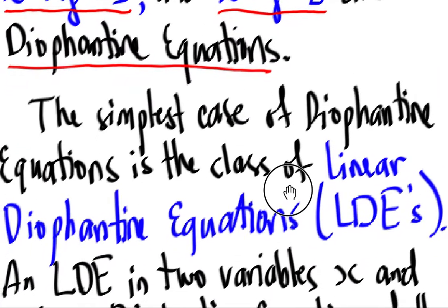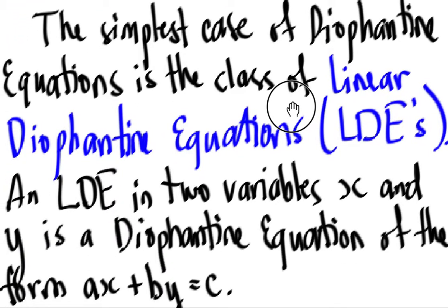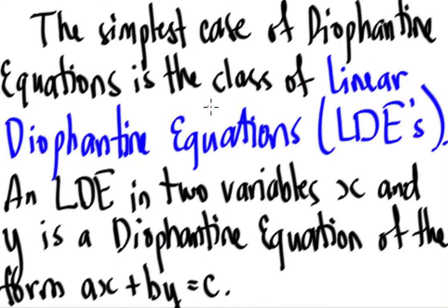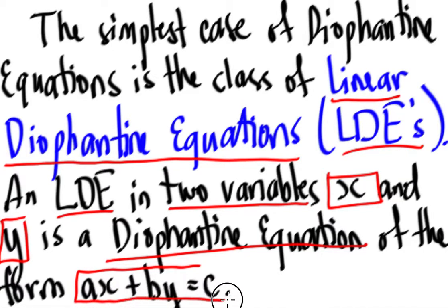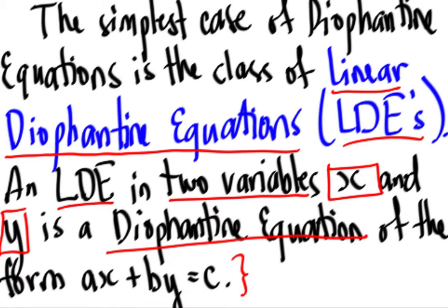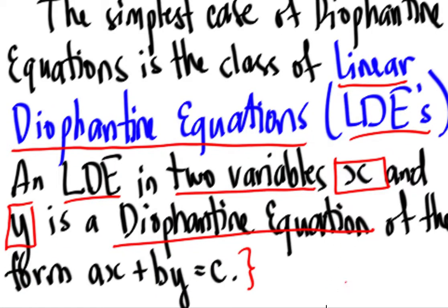So the simplest case of Diophantine equations, there's a lot of cases of Diophantine equations, in fact. So the simplest case, or the simplest class, shall we say, is the class of linear Diophantine equations. Linear Diophantine equations. In short, let's call them LDEs. So an LDE in two variables, we have the variables x and the variable y, is a Diophantine equation of the form ax plus by equals c. So this is our Diophantine equation in two variables, the simplest part. If we have the variables x and y, this is our LDE.